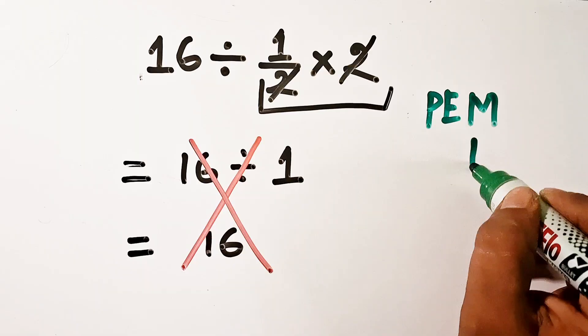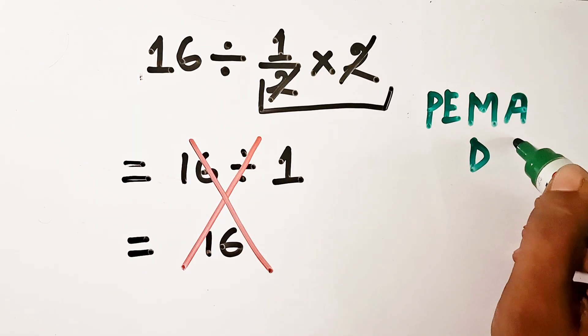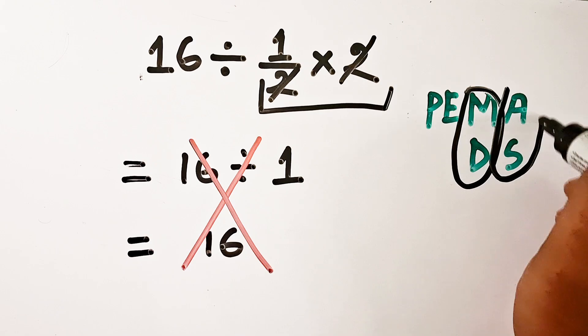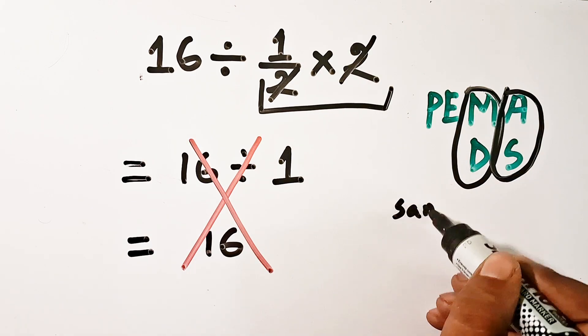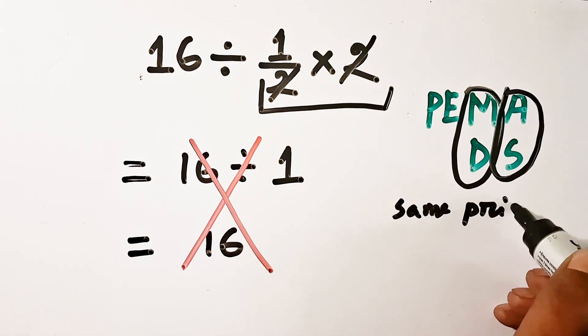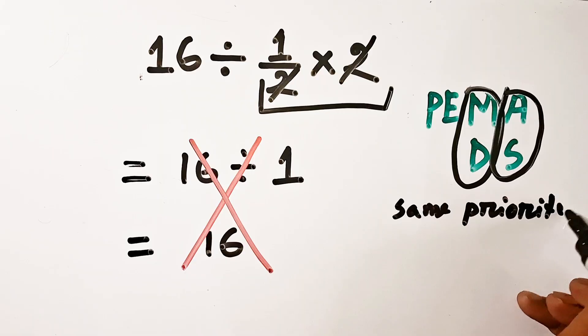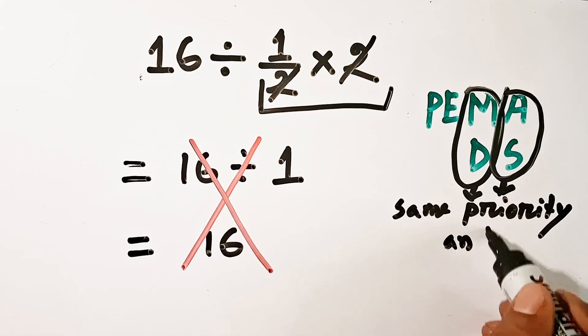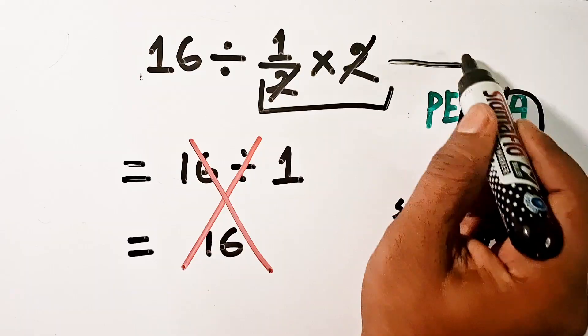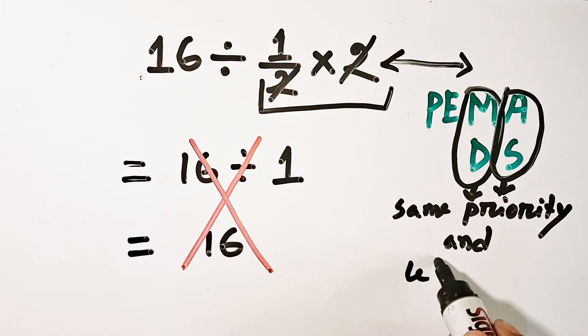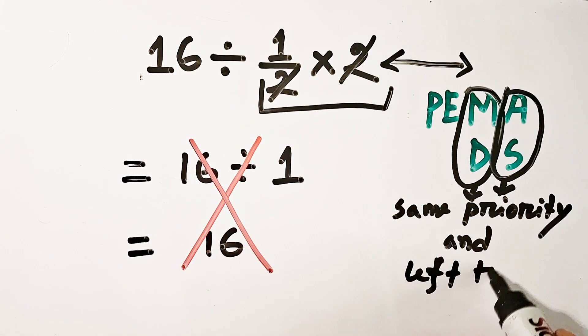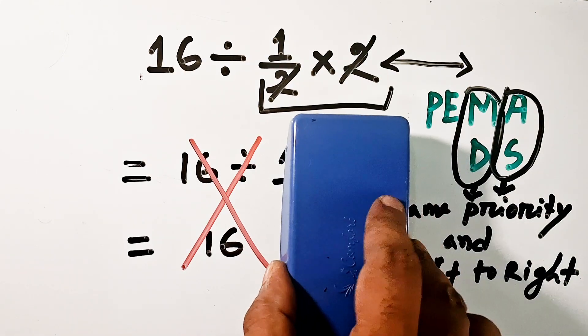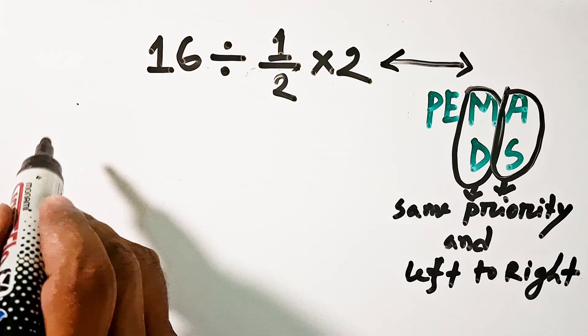Here a rule is PEMDAS rule. In PEMDAS rule, multiplication and division have same priority. You can do either multiplication first or division first. In this expression we did the multiplication first, but in this type situation you cannot do this because here another rule: left to right of the expression. So according to the rules...